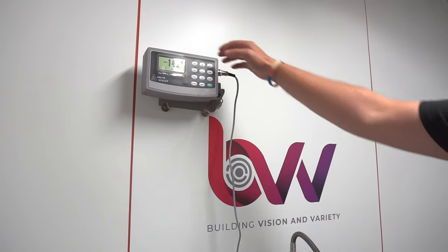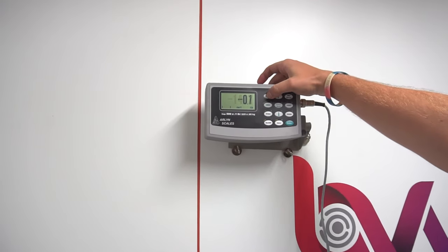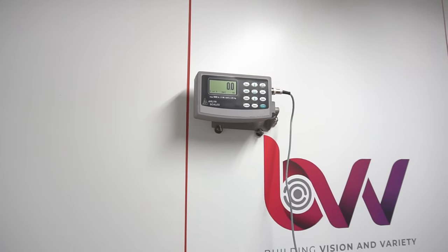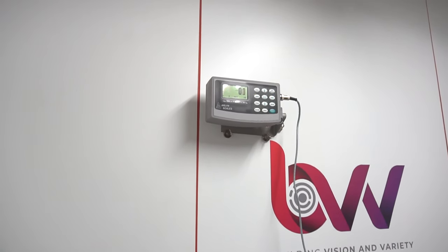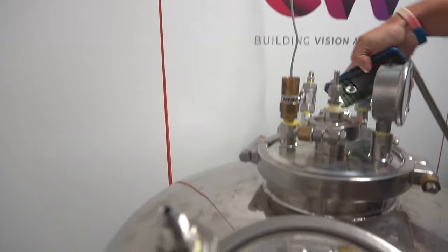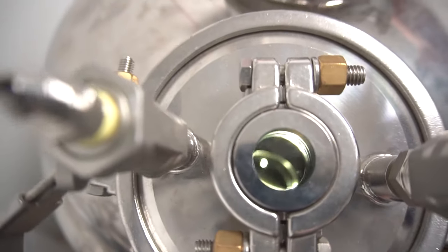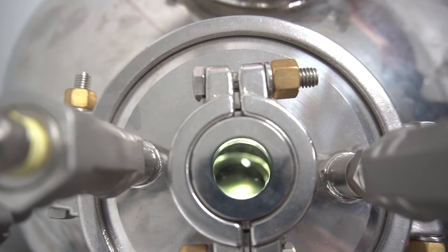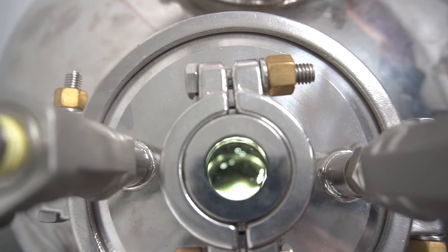I'm just going to zero the scale real quick. Now we're at zero pounds and our vessel, you can see inside of it, it's full of butane through that cyclic blast. So we have about 58 pounds of butane in there measured out before. We're going to use this scale to run our extractor.